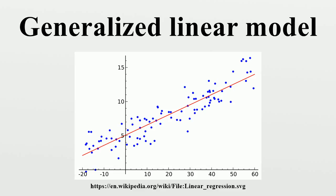Fitting. Maximum likelihood estimates can be found using an iteratively re-weighted least squares algorithm using either a Newton-Raphson method with updates involving the observed information matrix and the score function, or a Fisher's scoring method, where the Fisher information matrix is used. Note that if the canonical link function is used, then they are the same. In general, the posterior distribution cannot be found in closed form and so must be approximated, usually using Laplace approximations or some type of Markov chain Monte Carlo method such as Gibbs sampling.